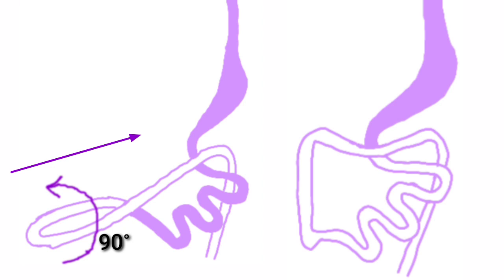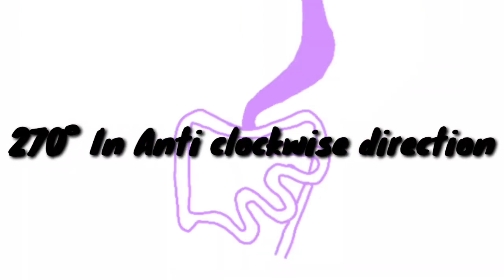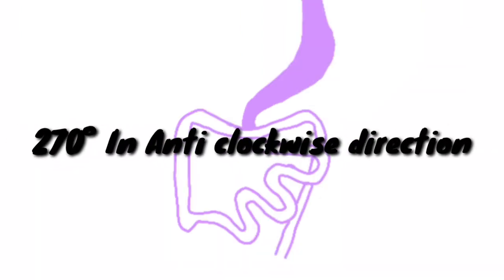This is the final structure. So 90 plus 90 plus 90 — totally, the midgut undergoes 270-degree rotation in the anti-clockwise direction.